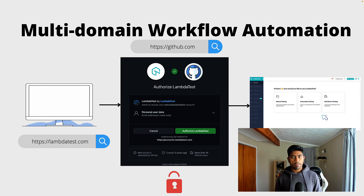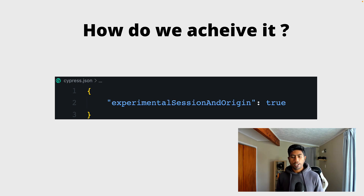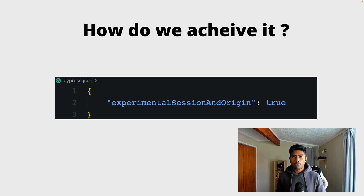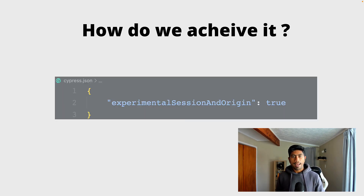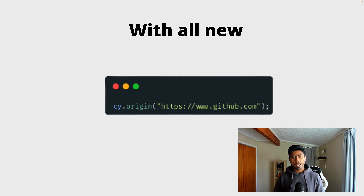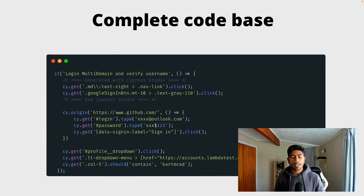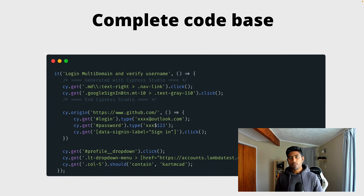We used to work around the problem in different ways, but now Cypress has come up with a very straightforward solution. Cypress has introduced a new experimental feature called 'experimentalSessionAndOrigin'. If you set this to true in your cypress.json file, multi-domain workflow automation can be done. You also need to add a bit of code using cy.origin, which is where you put an additional origin that happens within your workflow. You wrap the code inside the origin method, perform operations like entering username and password, and then return to the actual site — in this case, LambdaTest — to perform the rest of the operations.